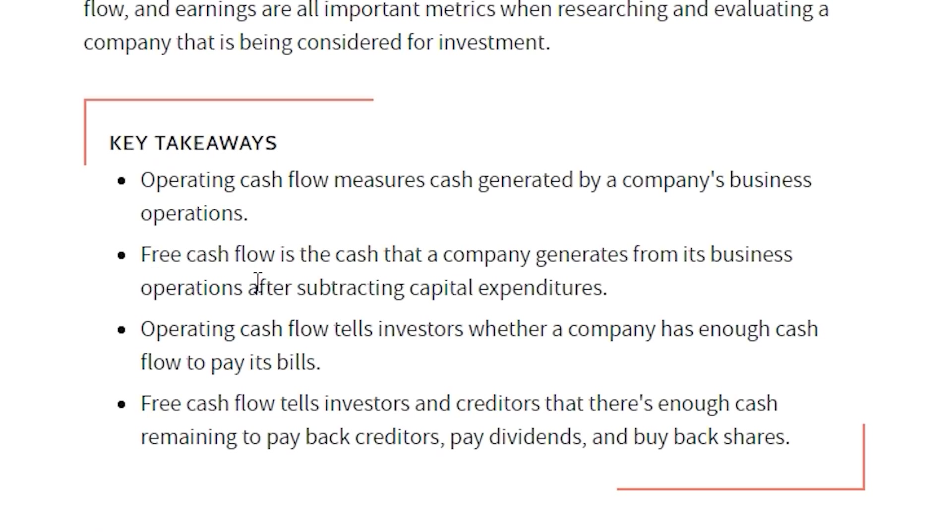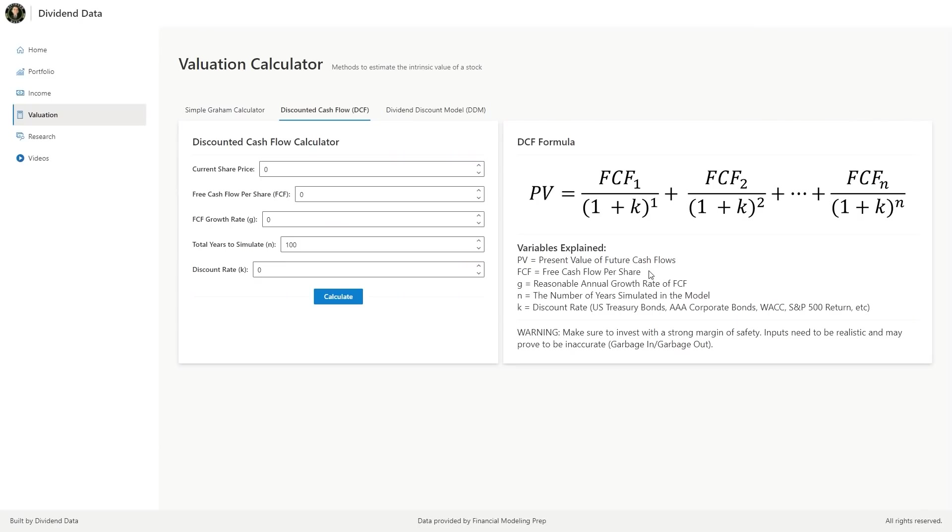Free cash flow is the cash that a company generates from its business operations after subtracting capital expenditures. It represents the cash flow that is available to all investors before cash is paid out to make debt payments, dividends, or share repurchases. This is preferable to operating cash flow because capital expenditures can often be a recurring cost in a business. Also, many investors prefer free cash flow per share over earnings per share because it's harder to manipulate and often provides a better view into the business. Free cash flow is the metric that Buffett tends to look at and is represented in the equation by FCF.